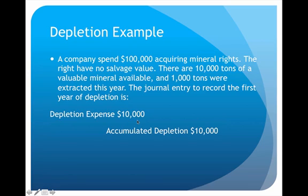That means in year one we're going to take ten thousand dollars worth of depletion. The journal entry titles are almost exactly the same as our depreciation journal entry — the only thing we change is the title. Instead of depreciation expense, it becomes depletion expense as a debit, and then a credit to accumulated depletion. This is a GAAP requirement every single time we have a natural resource.